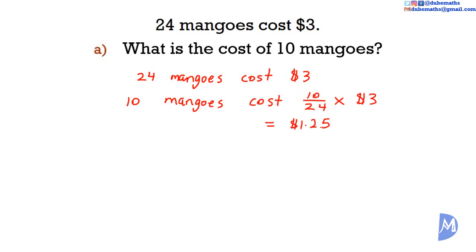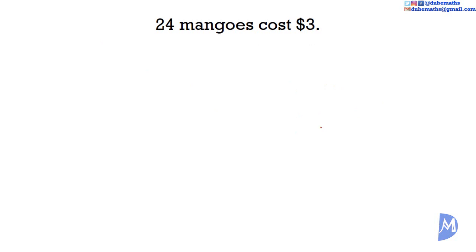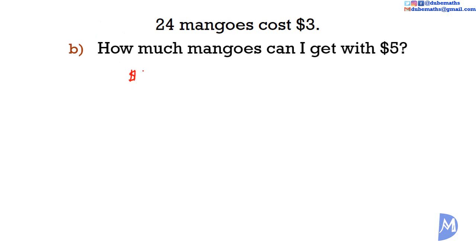And the second part of this example again, how much mangoes can I get with $5? So we know that $3 is the cost of 24 mangoes. We are asked to find out $5 is the cost of how much mangoes.